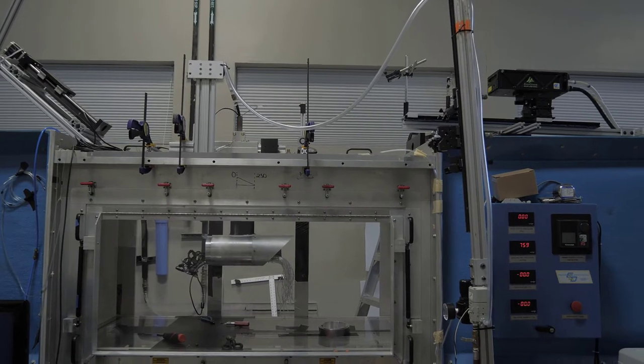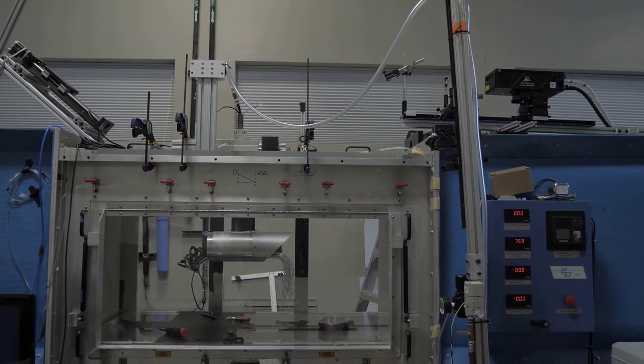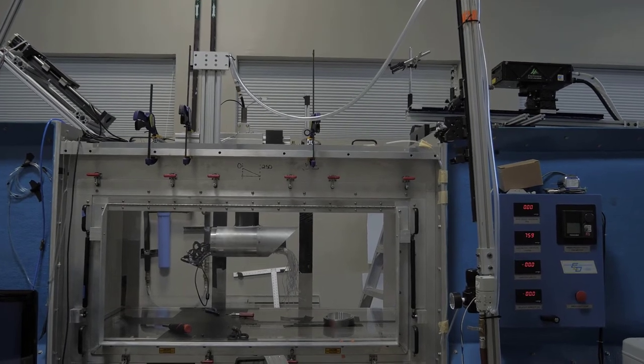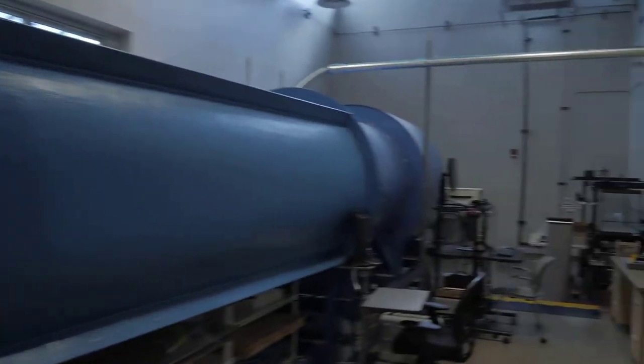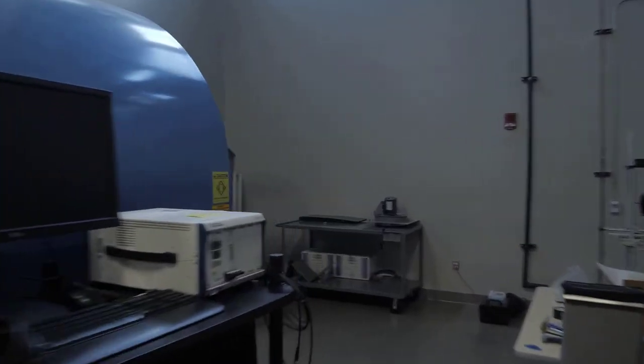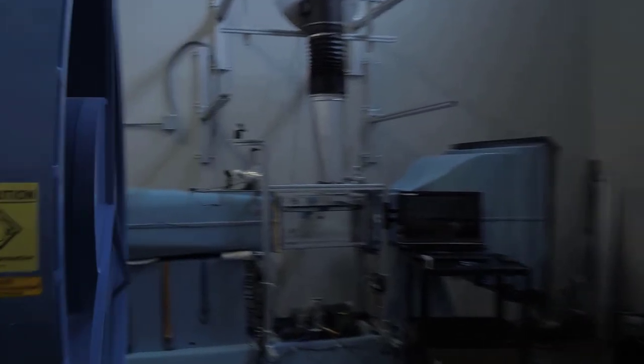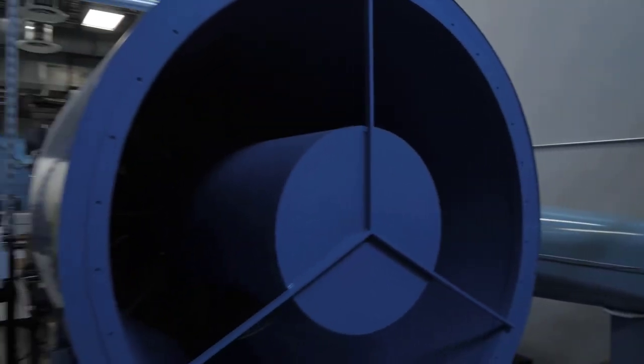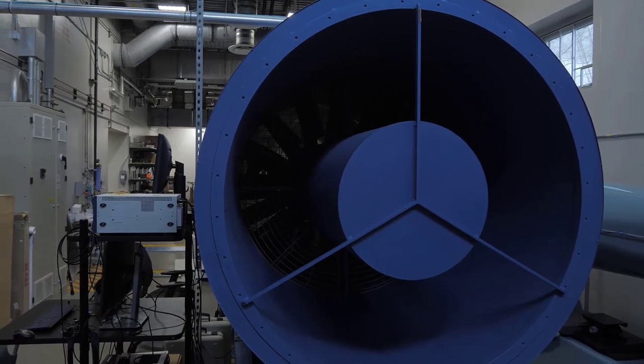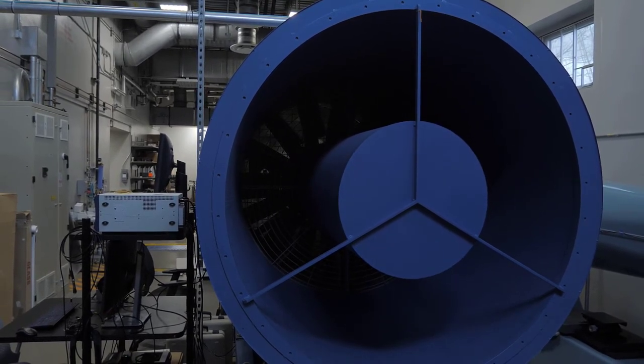The open style of the wind tunnel and the modular test section facilitates the process of installing and working on experimental models. The wind tunnel is outfitted with a series of screens and other flow conditioning systems, which result in a highly uniform flow field with very low turbulence intensities. The wind tunnel has state-of-the-art equipment such as pressure scanners and high-speed lasers to perform particle image velocimetry.